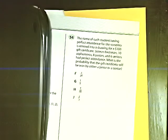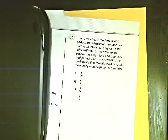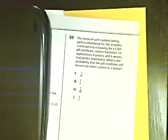Number 54. The name of each student having perfect attendance for the semester is entered into a drawing for $100. 16 freshmen, 10 sophomores, 8 juniors, and 6 seniors have perfect attendance. What is the probability that the gift certificate will be won by either a junior or a senior? Either a junior or a senior. Two minutes. Go.